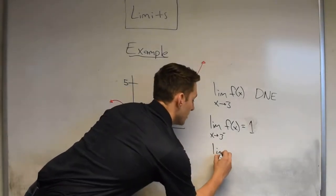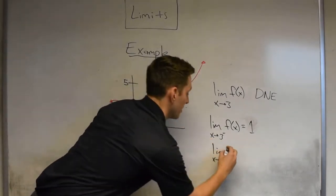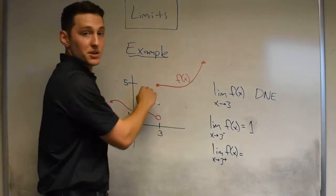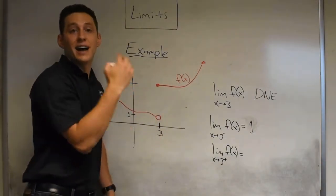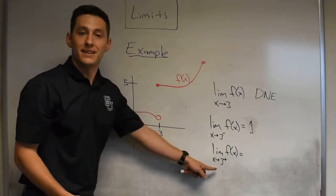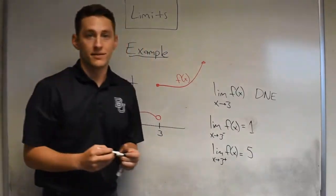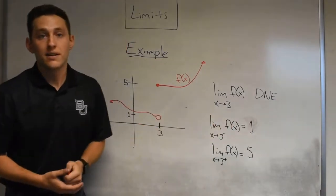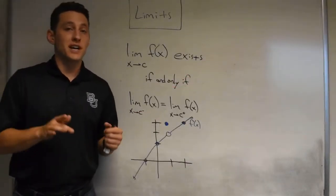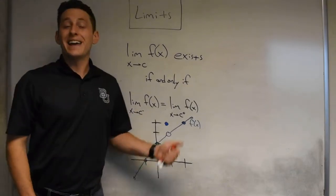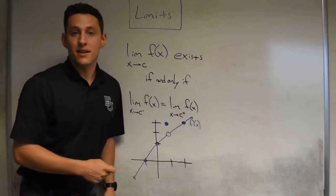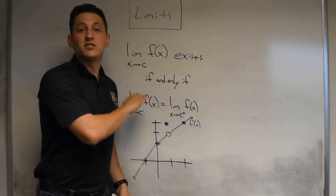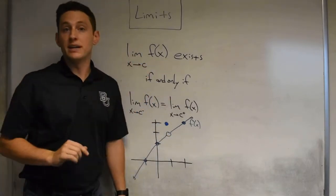Similarly, we have a limit from the right hand side, which we denote with a little plus sign next to the 3. When we are estimating purely based on right side numbers from x equals 3, it tells us to fill in the dot at y equals 5. So the right-handed limit in this case would be 5. You will only have a real limit — a full limit — if these two numbers are equal. So that's going to be the criterion: if the left hand limit and the right hand limit agree, then the real limit exists. If they do not agree, then the full limit does not exist.